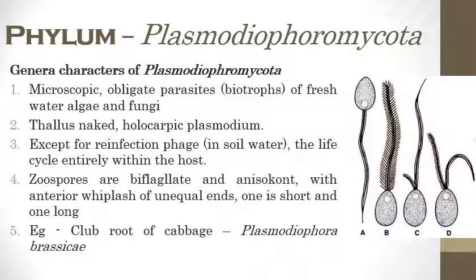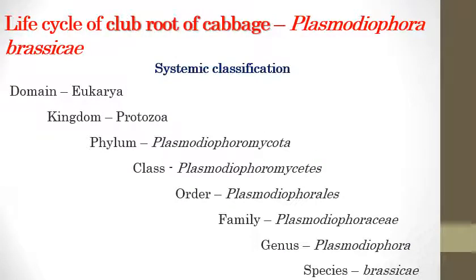The club root of cabbage is a very important disease caused by Plasmodiophora brassicae. Studying the life cycle is very important because it helps us understand how the pathogen causes infection, how spores are released, how the pathogen survives, and how reinfection happens — all of which help us develop management practices.